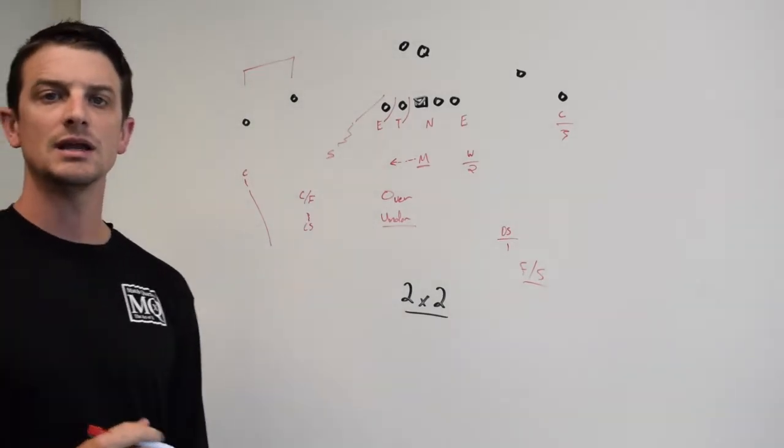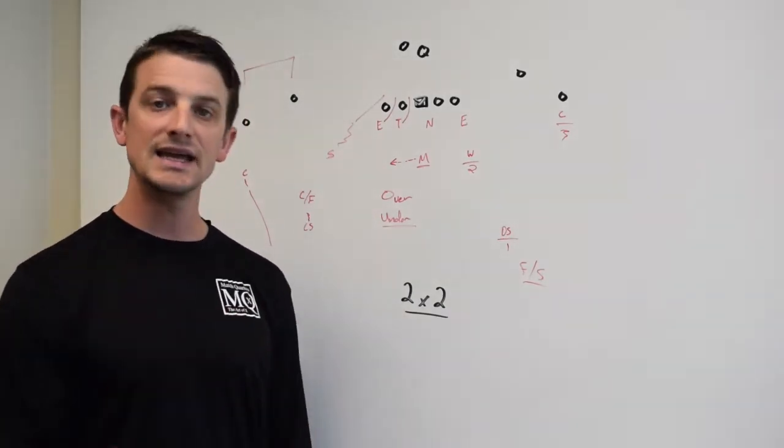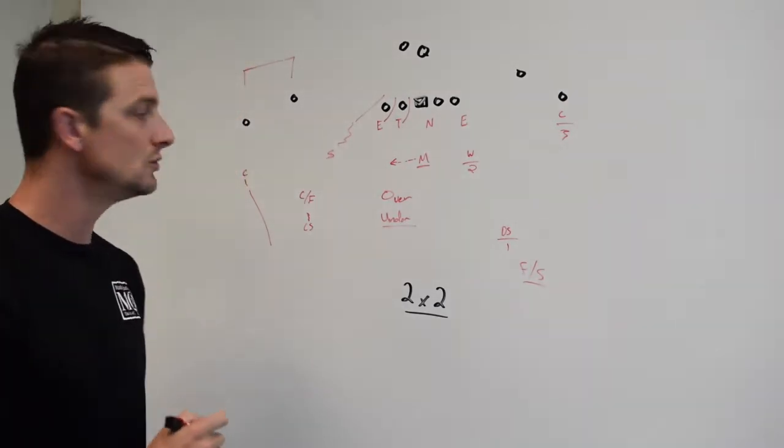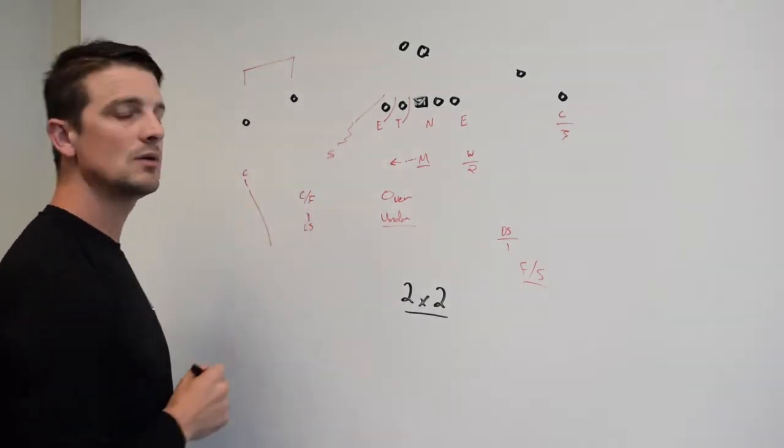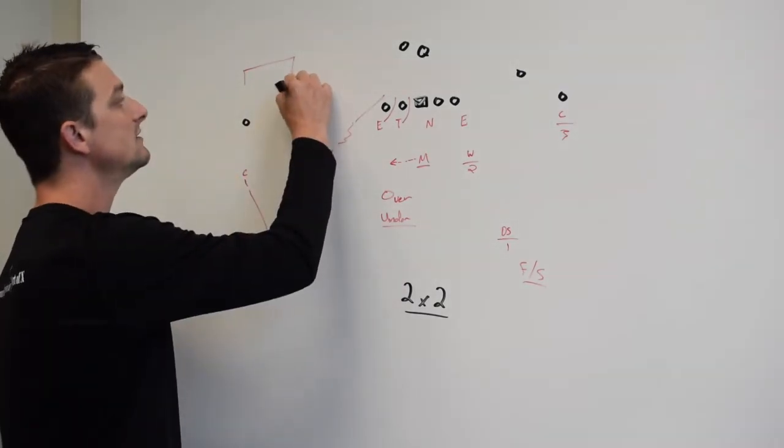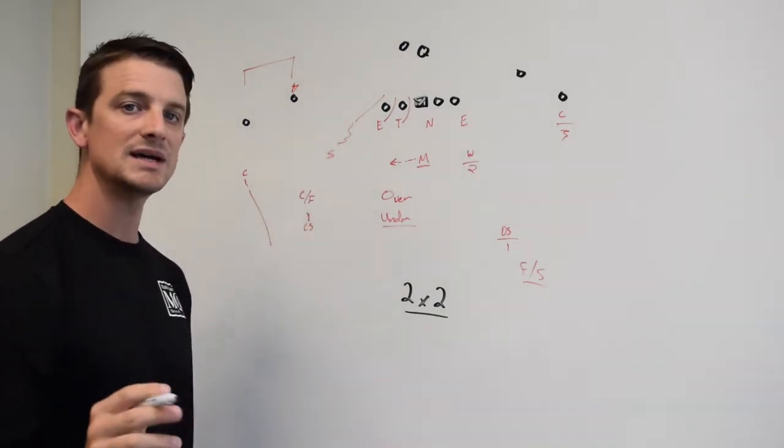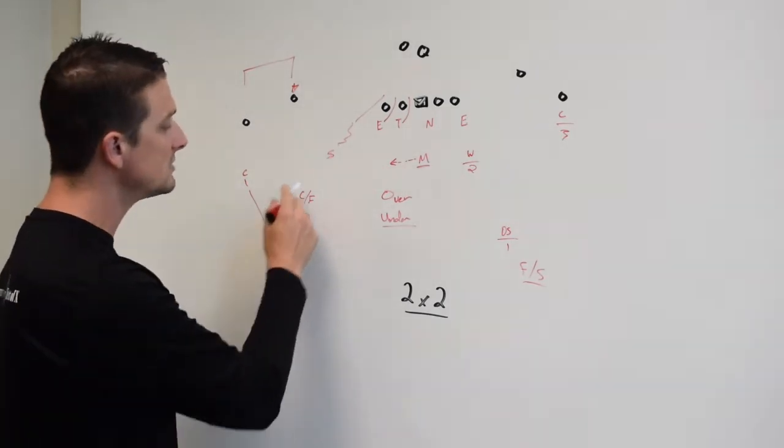Now, if offenses are using hot routes—slants, hitches—to counteract your blitz, then this is the coverage you want. Because most likely, the hot route receiver is going to be where the overhang is coming from. This is your hot receiver. So, he's most likely going to run a slant.